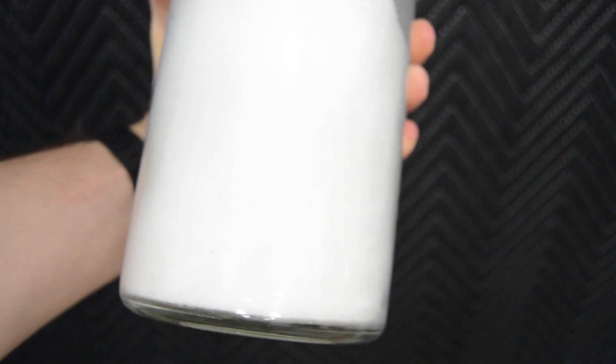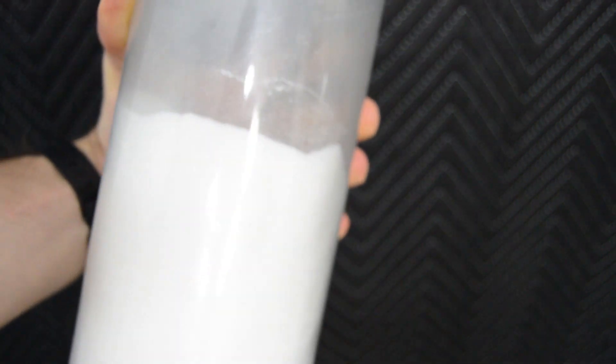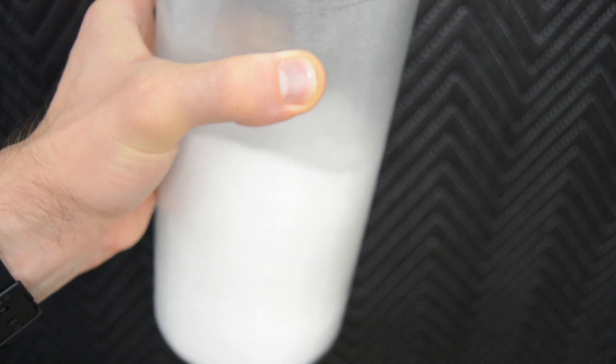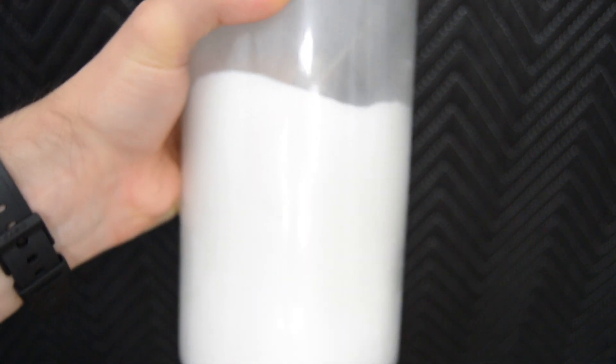Citric acid. This will make the solution more conductive and provide something called throwing power that will allow for better plating in cracks and crevices. Vinegar, aka acetic acid, is a possible substitute here but is not as strong an acid as citric acid.